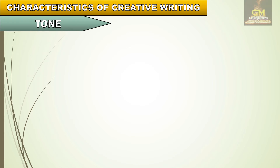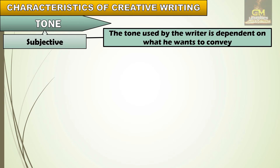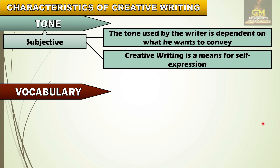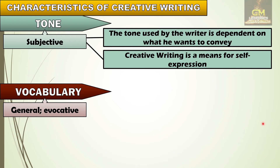Next, in terms of tone, creative writing follows a subjective tone. This means that the tone used by the writer is dependent on what he wants to convey. When we say subjective, this means that the writer allows his ideas, emotions, or opinions about a certain topic to influence how he or she writes about it. Whatever literary work he produces is very much influenced by his current emotion about the topic or theme he is writing about.